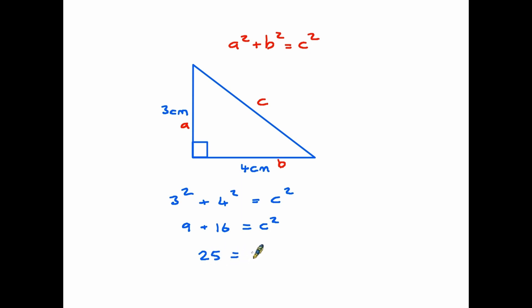So 9 plus 16 is 25. Therefore, C squared is 25. So again, writing up the side here, if we know C squared equals 25, then we know that C is therefore the square root of 25. Therefore, C the square root of 25 is 5. So this triangle is in fact 3 centimeters, 4 centimeters, and the longest side is 5 centimeters.